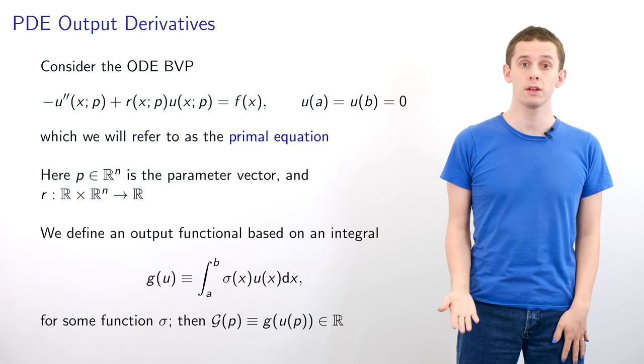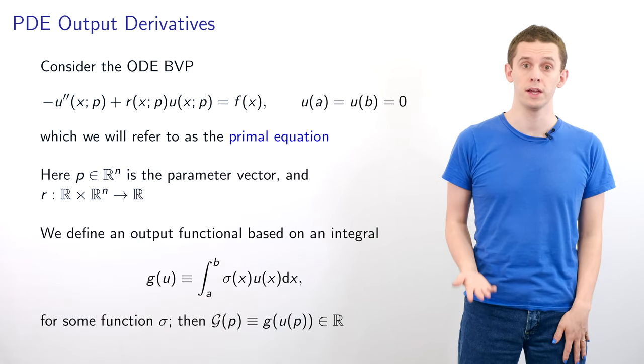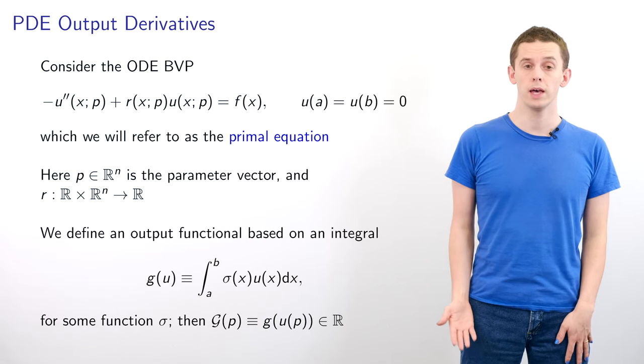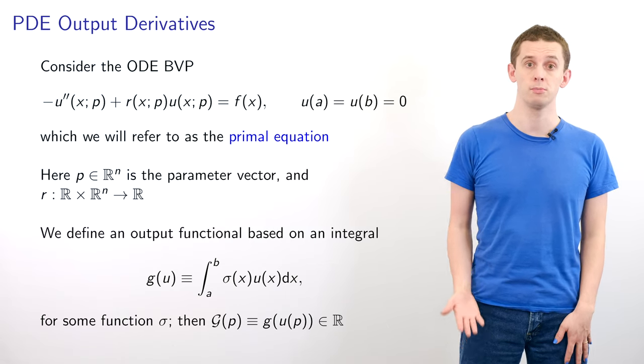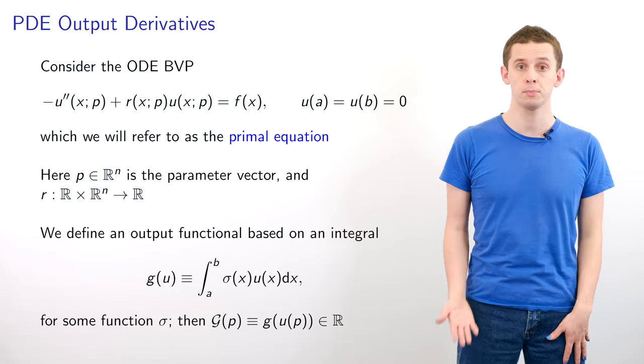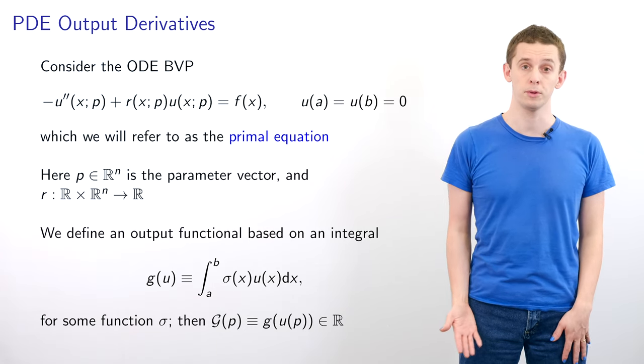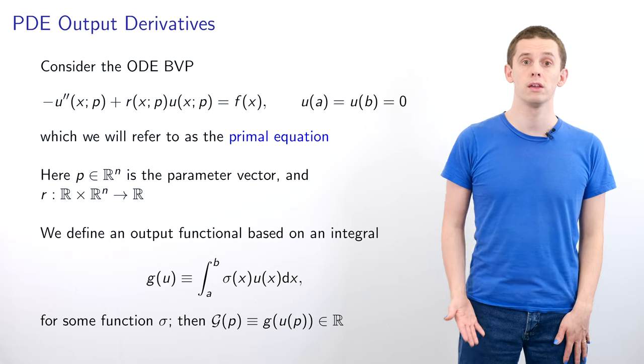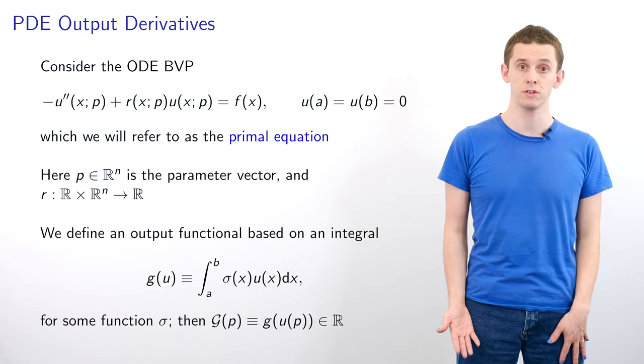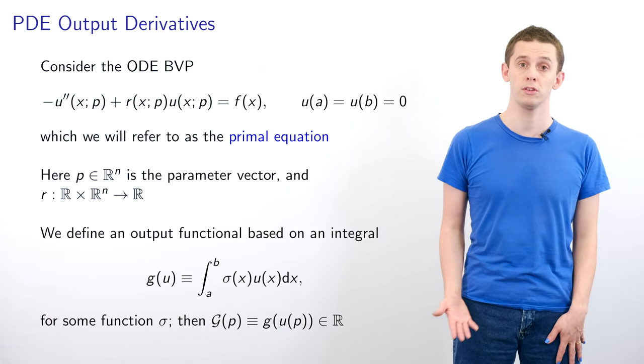As an example let's consider the ODE boundary value problem on the interval from a to b. The equation is: -u''(x;p) + r(x;p)u(x;p) = f(x) using Dirichlet boundary conditions u(a) = u(b) = 0.